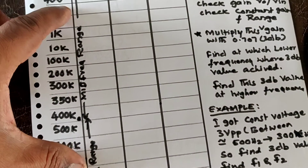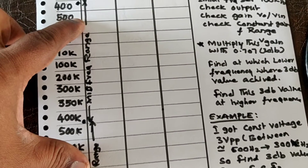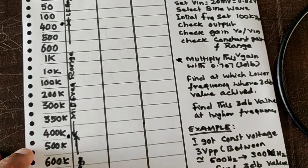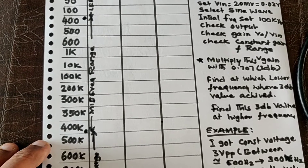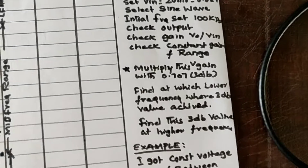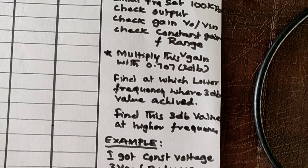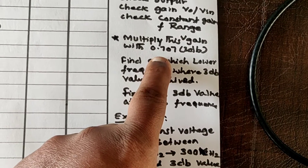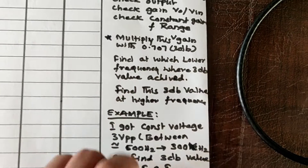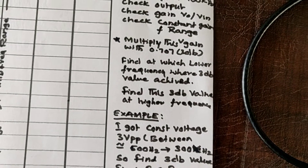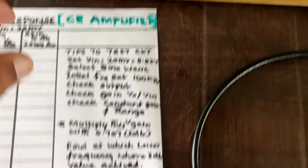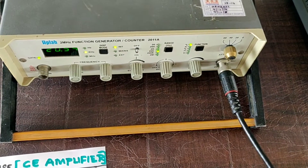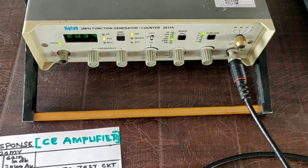What you have to do first is find out what is the mid-frequency range. Mid-frequency range is nothing but the 3 dB below the maximum gain. To find that out, the procedure is: first find out the mid-range gain or voltage, multiply it with 0.707, and find out that value. Once you find that value, you adjust the function generator at the lower frequency side as well as upper frequency side to find the mid-range frequency.